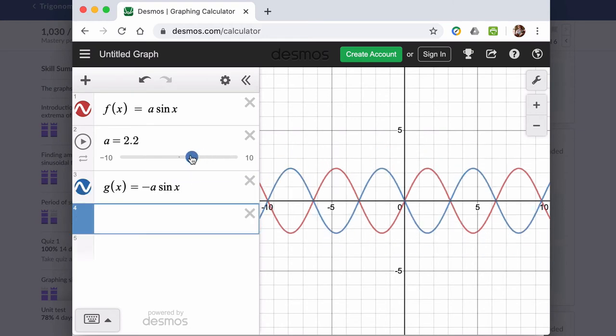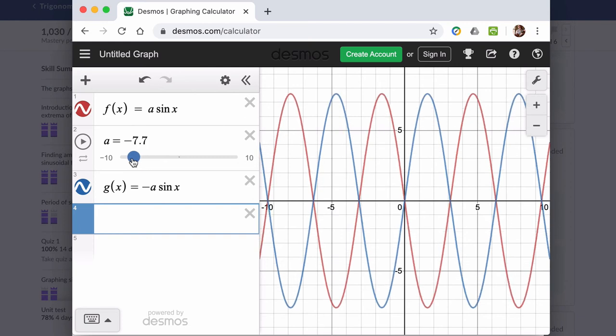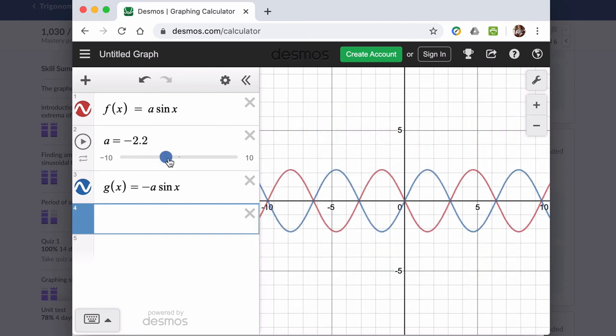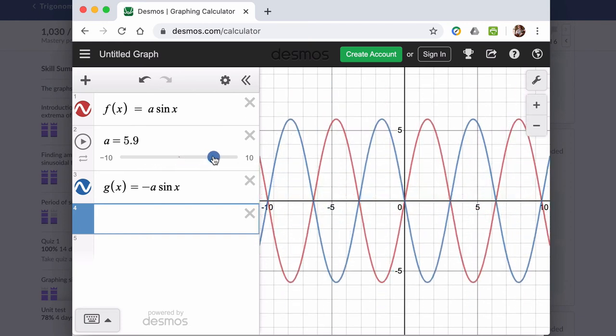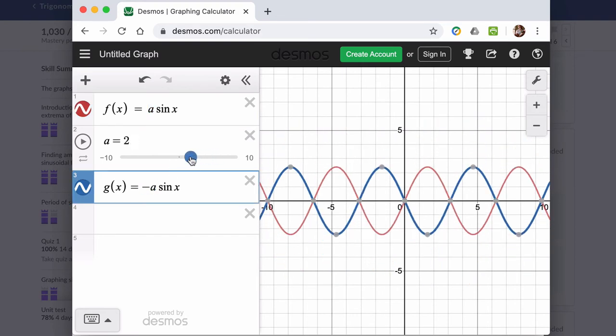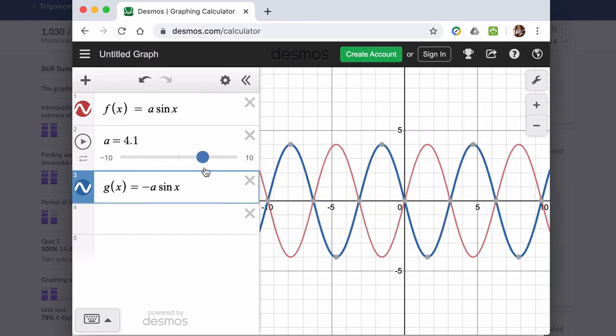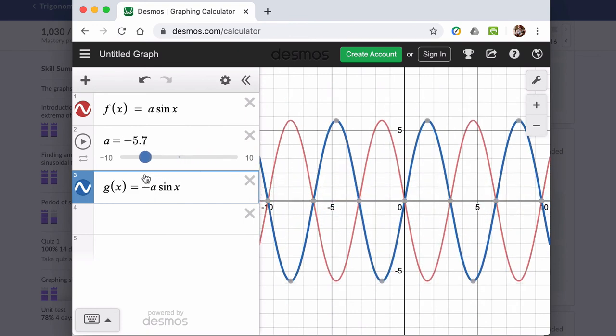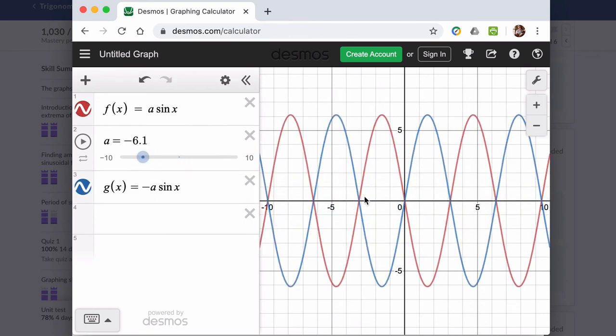So the reason I do this is so you can see that whatever the amplitude is on f of x is the opposite value for a in g of x. So let me say that again. Whatever the value is for a of f of x, g of x is the opposite value, but they have the same amplitudes. You see how the amplitude is the same? Amplitude is not about direction. It's about distance from the midline.